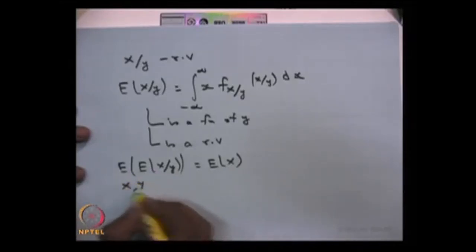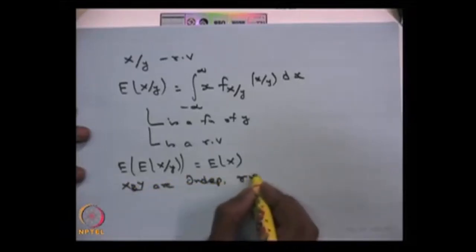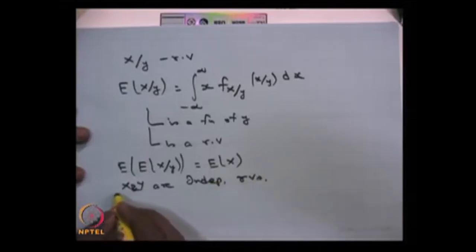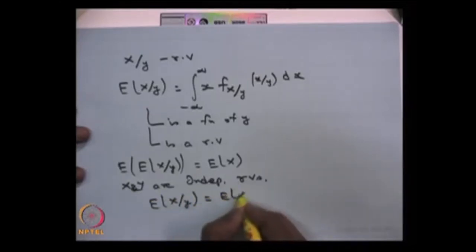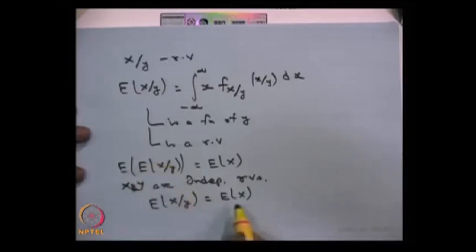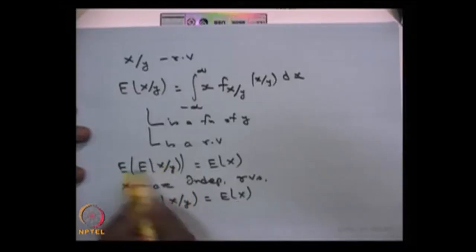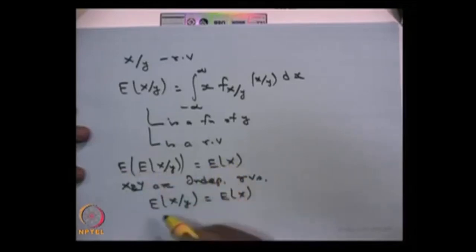If the two random variables are independent, there is no dependency between X and Y, so the expectation of X given Y is the same as the expectation of X. This can be validated: if E[X|Y] = E[X], which is a constant, then the expectation of that constant is the same constant, which is consistent.